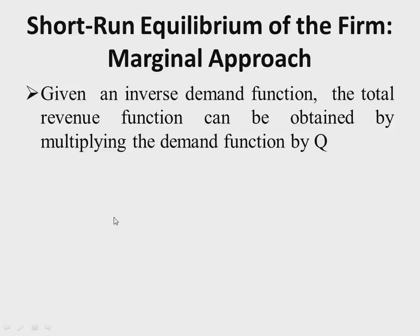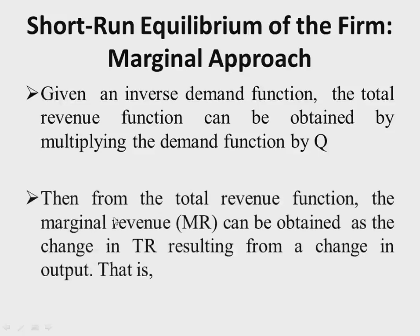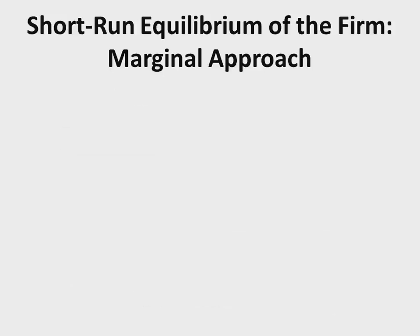From the total revenue function, we can obtain the marginal revenue function by simply getting the change in total revenue brought about by a given change in output — presented as ΔTR/ΔQ. Or if you have a total revenue function, you can simply get the derivative of total revenue with respect to output Q.